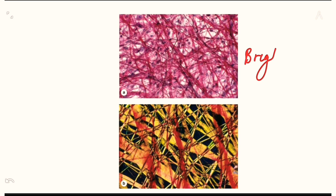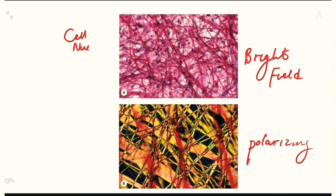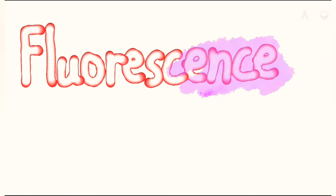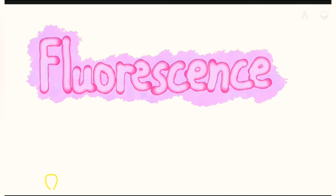Here is an image: the top shows a brightfield microscope image where we can see cell nuclei as dark dots, elastic fibers, and collagen fibers. The bottom shows a polarizing microscope image where we only see the collagen fibers, which are macromolecular structures.